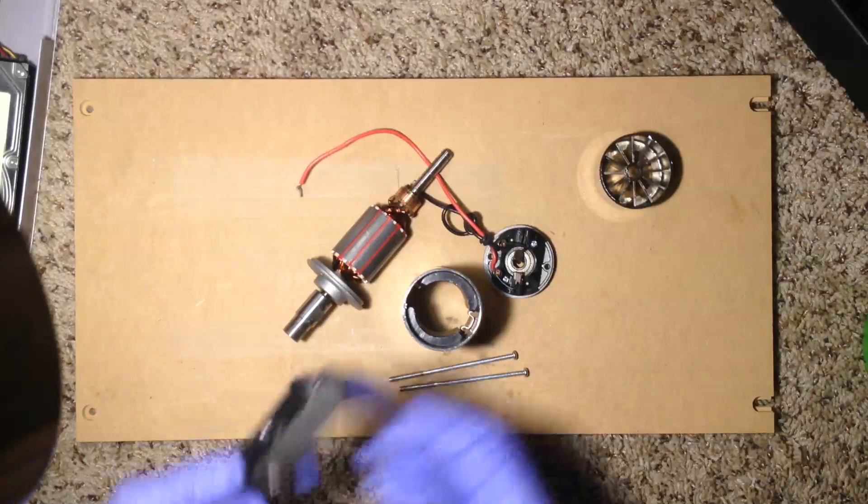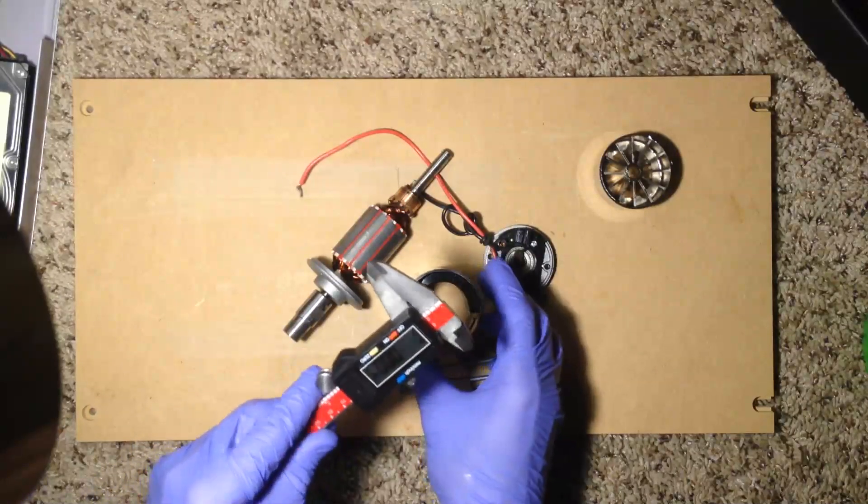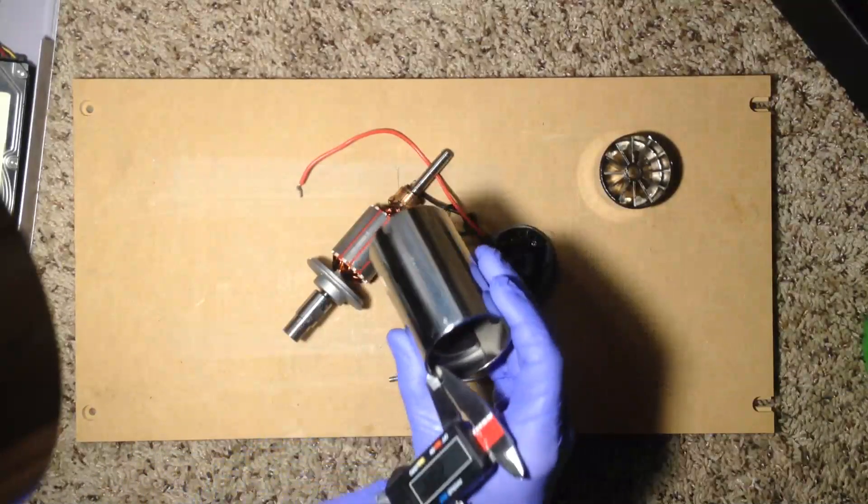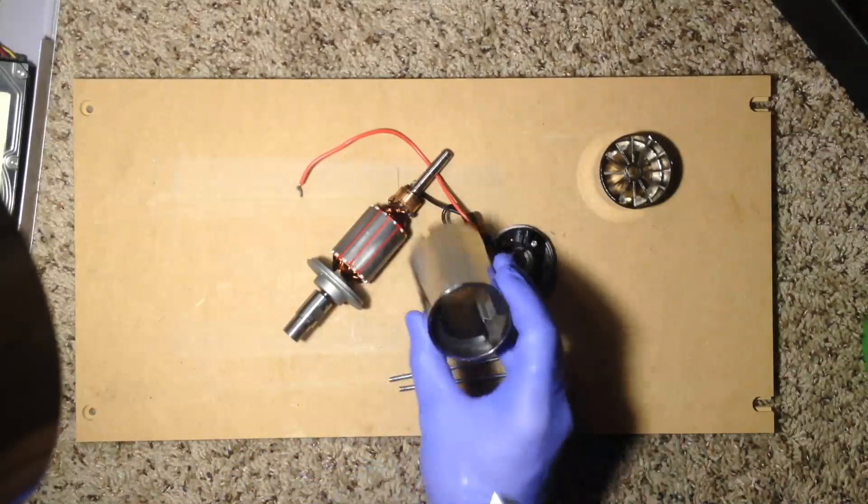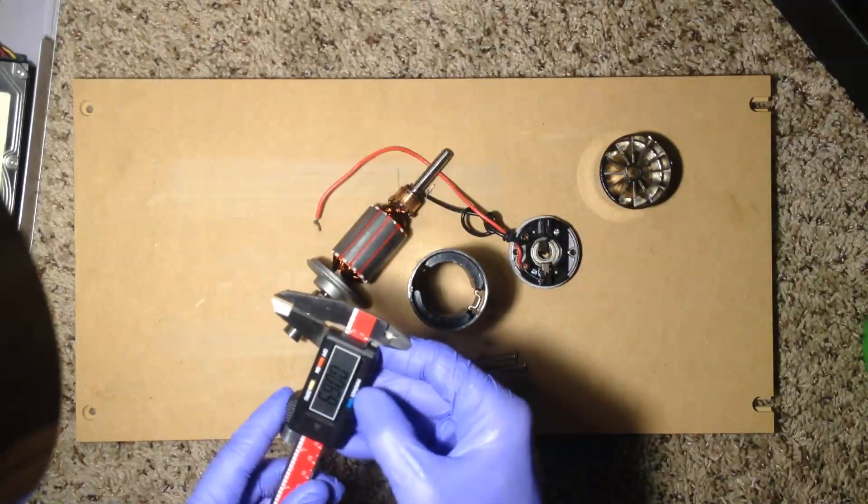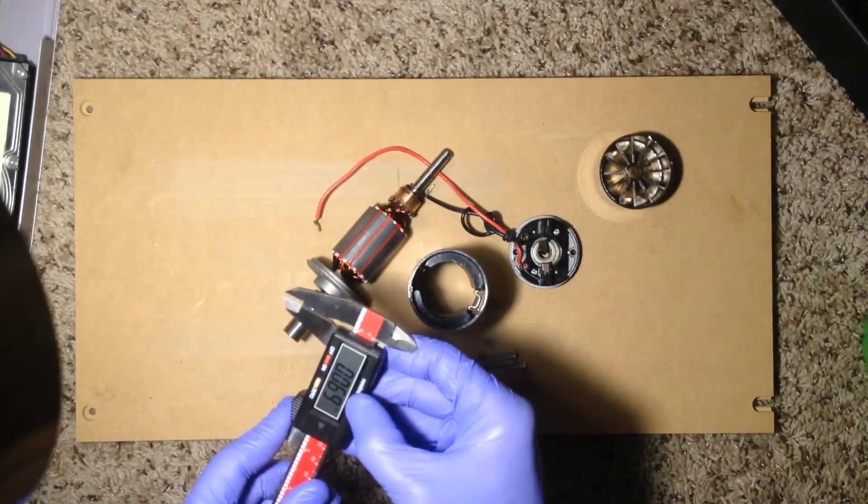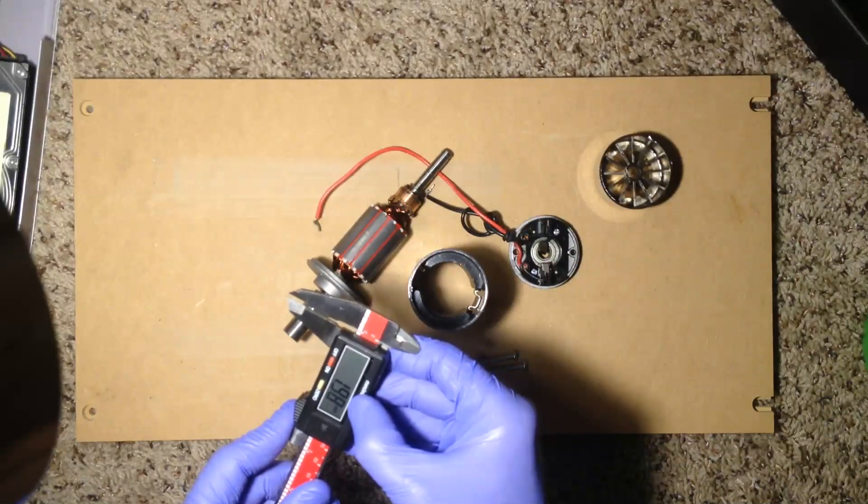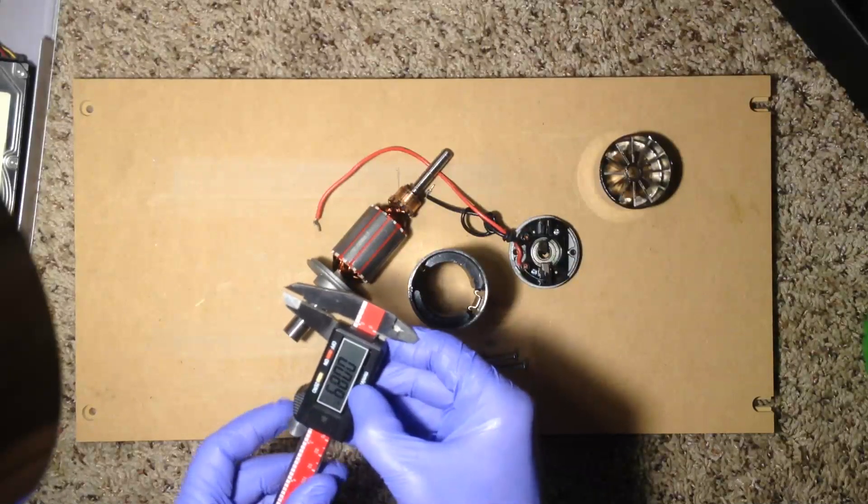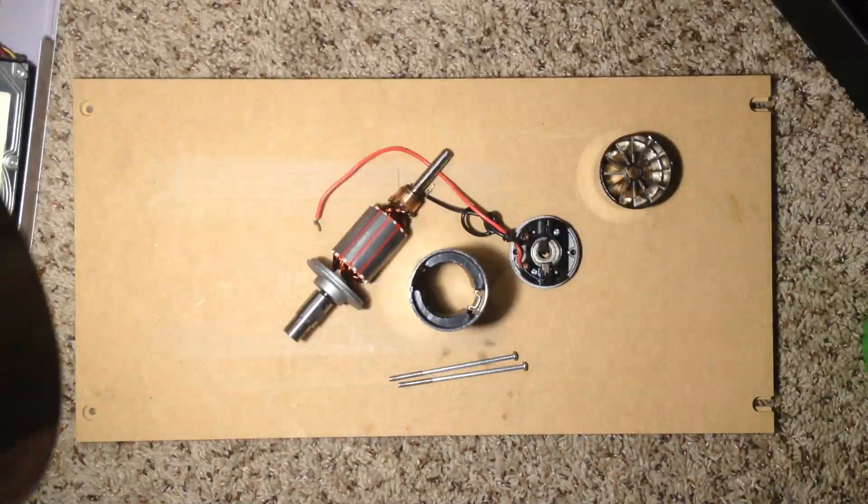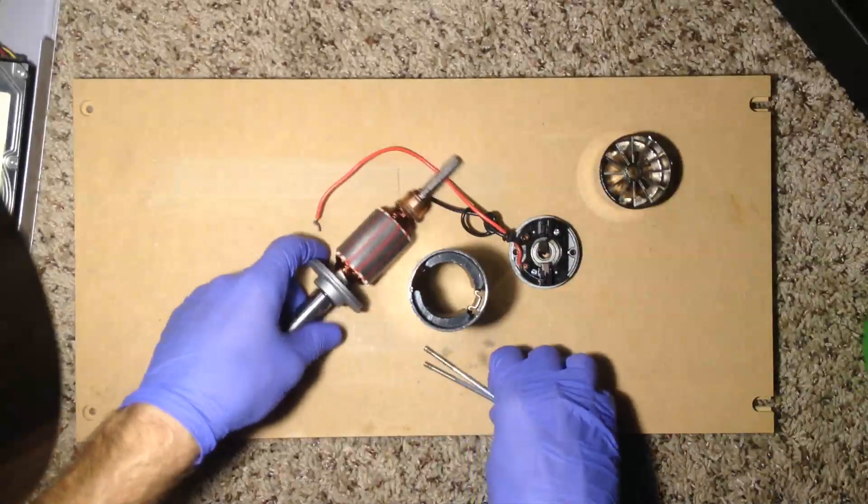I'll grab my caliper here. This is 2.08 millimeters, which is 0.075 inches maybe. Don't quote me on that. Let's see. Maybe 0.85. You do the math. 25.4.